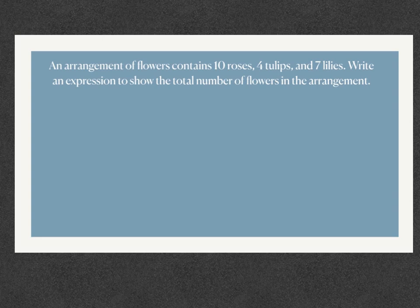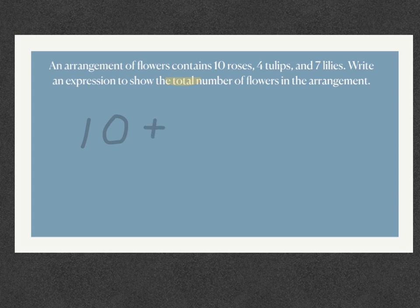Let's take a look at one. An arrangement of flowers contains ten roses, four tulips, and seven lilies. Write an expression to show the total number of flowers in the arrangement. Now if you look at the word 'total' — I'm going to highlight it here for you — that's one of the key words you've been talking about in the past couple of weeks, and 'total' tells us that we should add. So we're going to take the ten roses, the four tulips, and the seven lilies and write an expression to show that we would add them together.